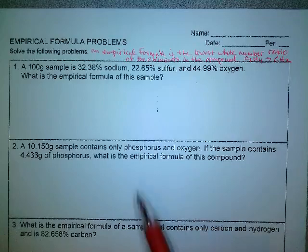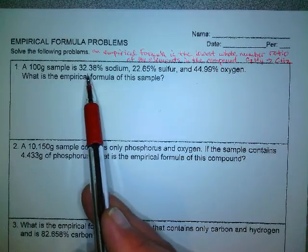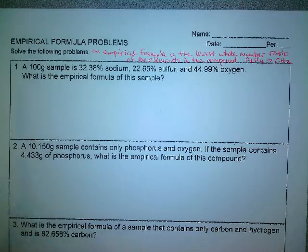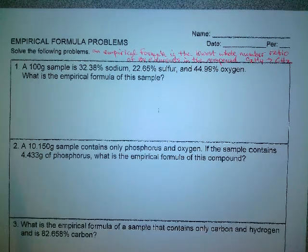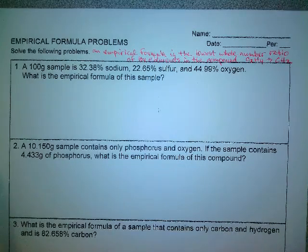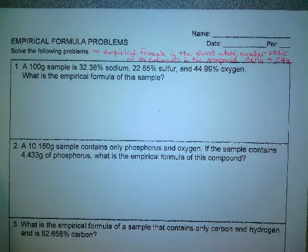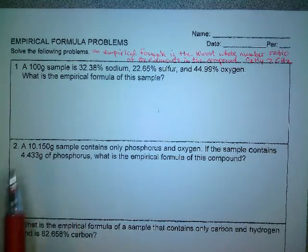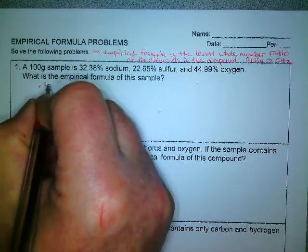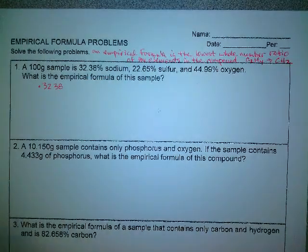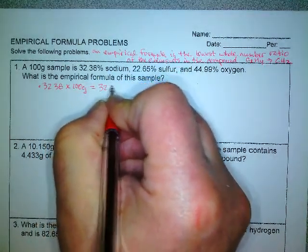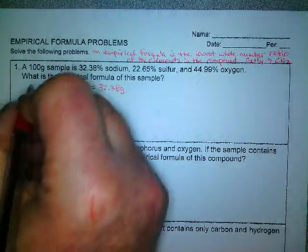We're going to start off with a 100 gram sample of sodium and sulfur and oxygen where we have percentages. Now, in this particular problem they give us the 100 grams, but honestly I would always make it out of 100 grams because it makes the math easier. So if I have 32.38%, I can write that as .3238 as a decimal times my 100 grams, and that's going to give me 32.38 grams for the sodium.